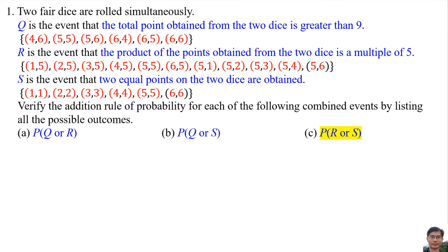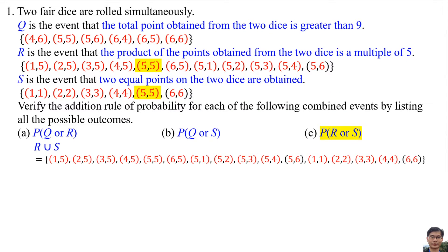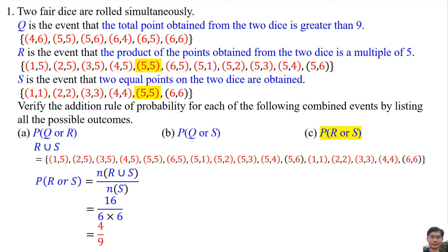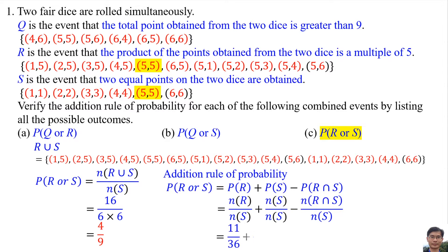For part C, the probability of R or S: The common element for R and S is (5,5). R or S is R ∪ S. We copy all elements in R and all elements in S except the common element (5,5). The probability of R or S is 4/9. Using the addition rule, the probability is also 4/9, so the addition rule of probability is verified.